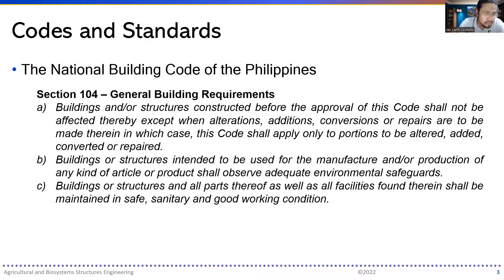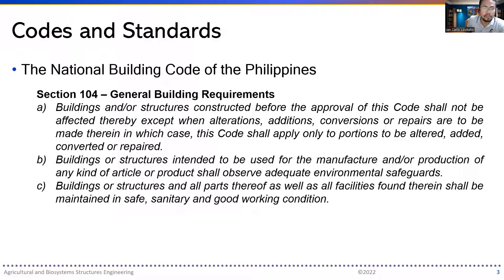Section 104 defines the general building requirements. Buildings or structures intended for the manufacture or production of any kind of article or product should observe adequate environmental safeguards. Buildings or structures, and all parts thereof, as well as all facilities found therein, shall be maintained in safe, sanitary, and good working condition. That is the general building requirement identified in the code.